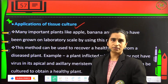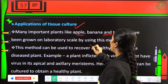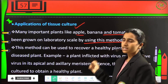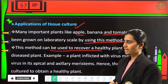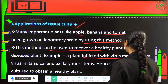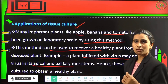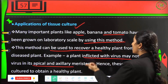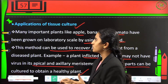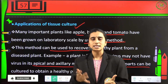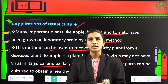Applications of tissue culture: many important plants like apple, banana, and tomatoes have been grown at laboratory scale using tissue culture techniques. This method can also be used to recover a healthy plant from a diseased plant. For example, a plant infected with virus may not have the virus in its apical and axillary meristems — these parts can be cultured to obtain a healthy plant, recovering it even from a diseased specimen.